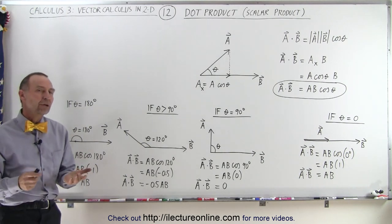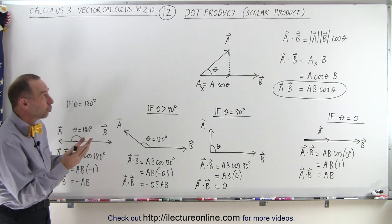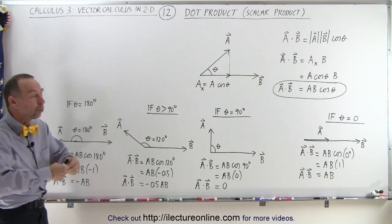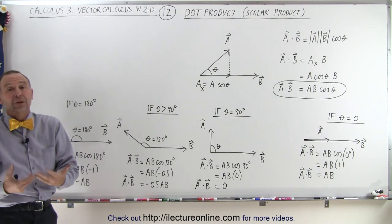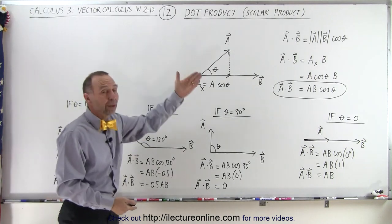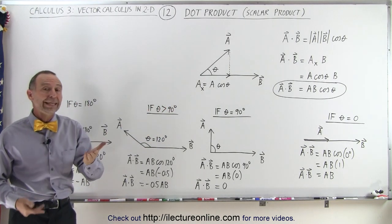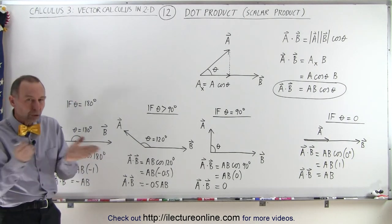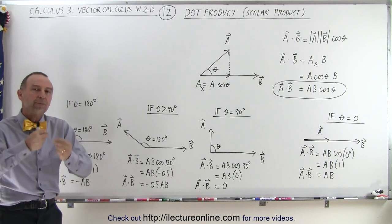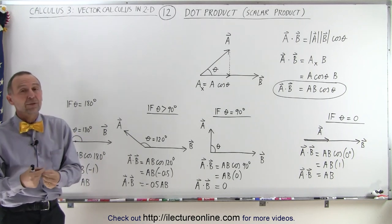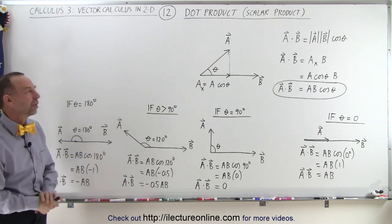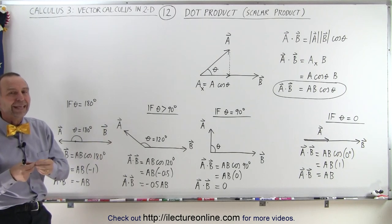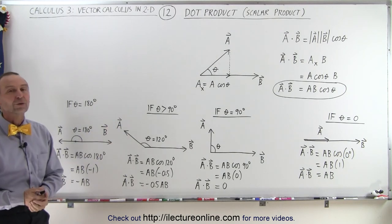So why do they call a dot product also a scalar product? That's because when you multiply one vector with another vector via the dot product, the result is not a vector at all — it's simply a scalar quantity. Later on, when we talk about cross products, multiplying two vectors via the cross product will yield another vector, but in this case, when you do a dot product the result is a scalar quantity, and that's how you calculate it.